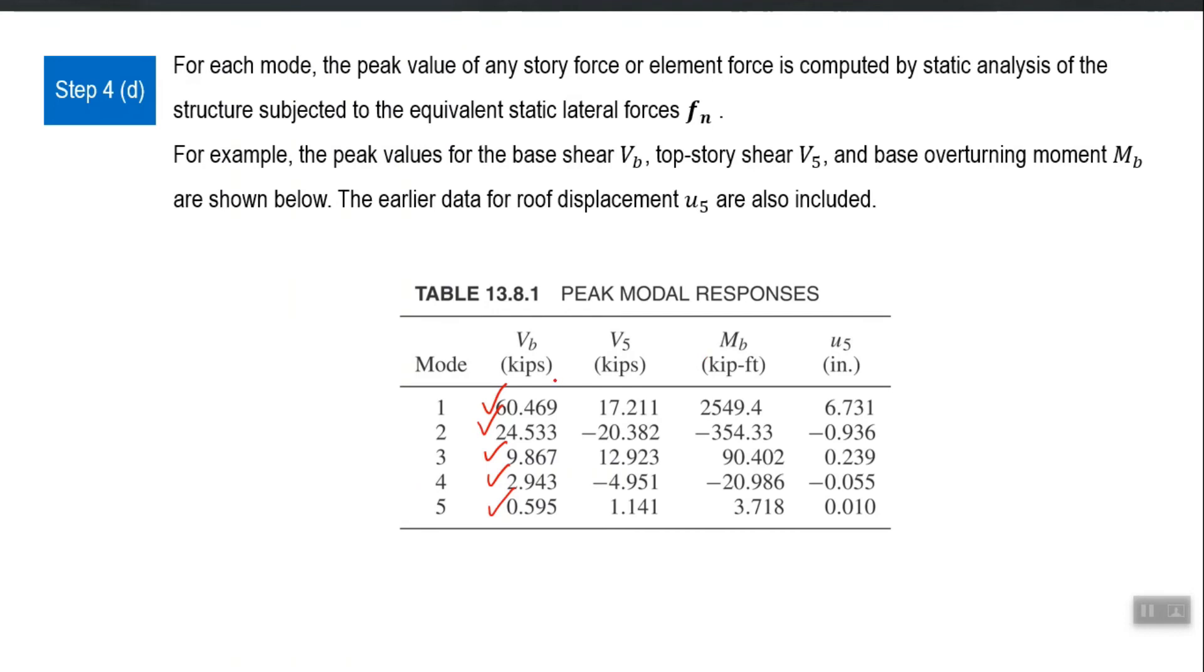Similarly, the story shear in the fifth floor, for example, this is one response quantity. One number will be coming from one mode, other number will be coming from other mode, third, fourth, fifth. Now, see some numbers are negative, but SRSS will just make them positive all. This is one uncertainty in the modal combination rule.